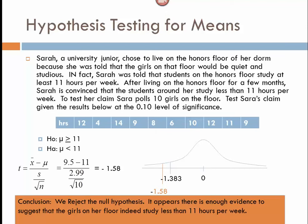So again, we have stated the rejection or the failing to reject of the null hypothesis, and also we say what the evidence suggests. We would say there's enough evidence or sufficient evidence to suggest that the girls on her floor indeed study less than 11 hours per week.